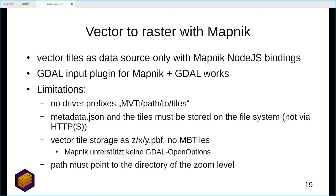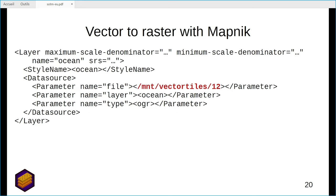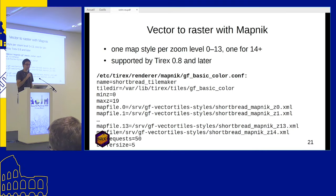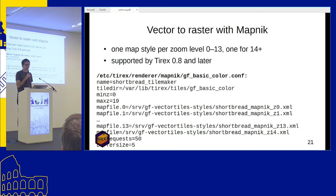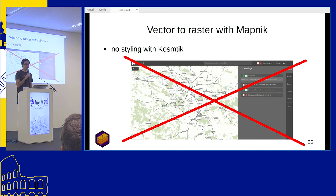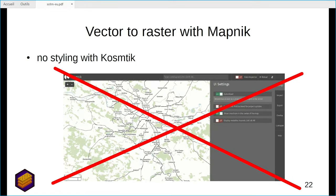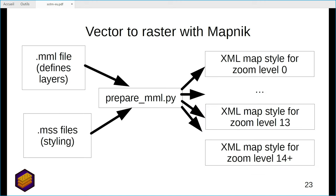The path to the vector tiles must point to the directory of the zoom level, because you cannot tell MapNIC which zoom level to use. This means you have to have one map style per zoom level. TREX 0.8 supports this, so you can give it one map file per zoom level. This makes configuration difficult and makes it hard to style maps at all. Carto doesn't support vector tiles used with GDAL at MapNIC, so you have to render them with NIC4. You need a script to generate the XML styles and must pre-process the MML file before calling Carto to generate the XML map styles.